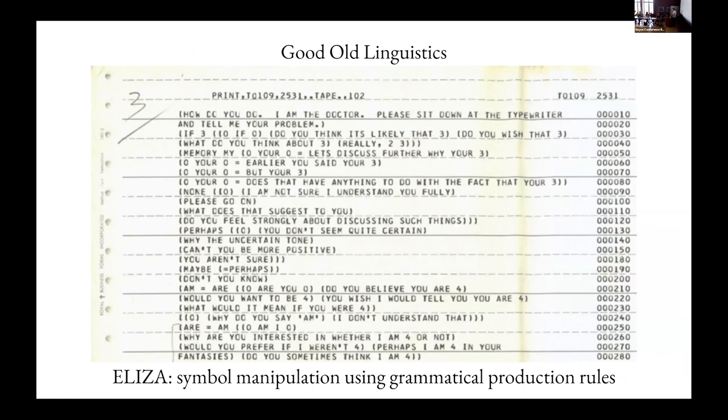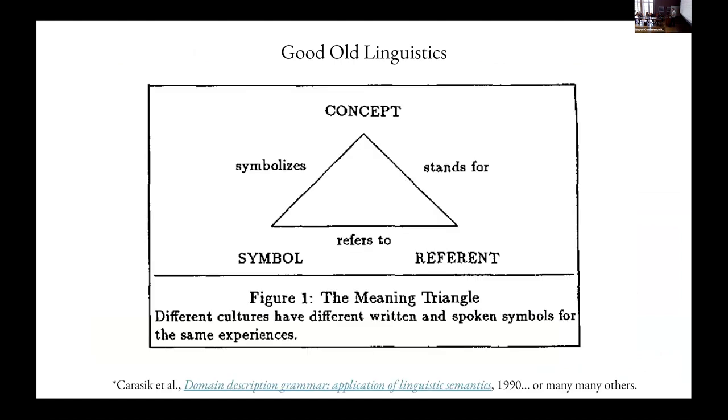In the meantime, AI took the form of good old linguistics, largely, things like ELIZA, symbol manipulation using grammatical production rules. There is some version of this diagram in most of those good old-fashioned AI papers, this triangle of symbol, referent, and concept, which is sort of like a mystical triangle with an eye on top of a pyramid if you squint and look at it. And I think that there's actually a little bit of Platonism sort of hiding in this pyramid.